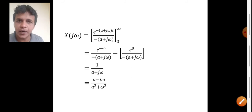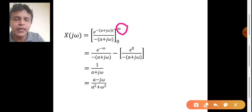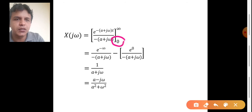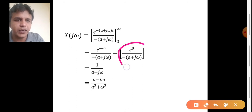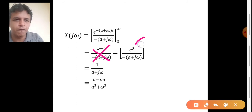In the next step, we perform upper limit minus lower limit. For the upper limit, we substitute t equals infinity, so we get e power minus infinity divided by minus (a plus j omega). For the lower limit, substituting t equals 0 gives e power 0 divided by minus (a plus j omega). The value of e power minus infinity is 0, so the upper limit term drops out. e power 0 equals 1.